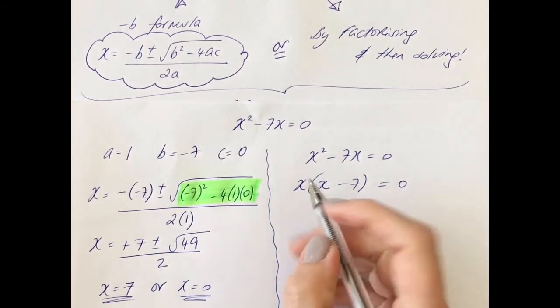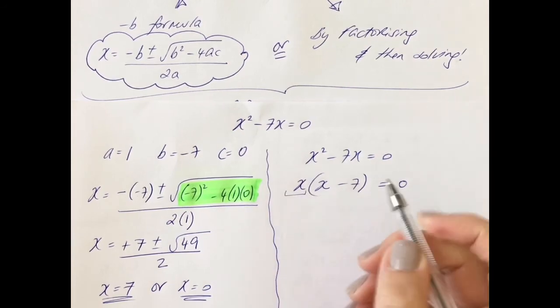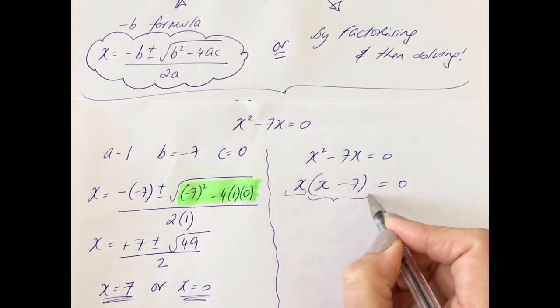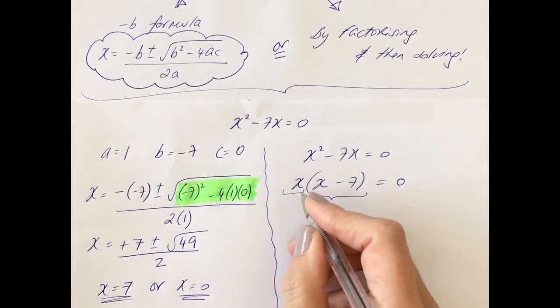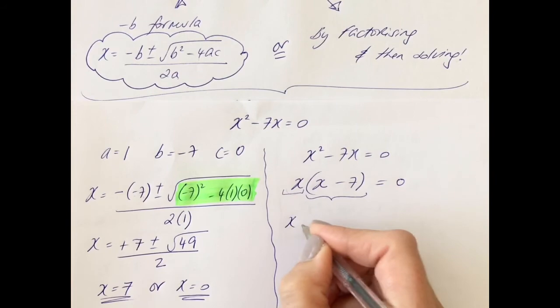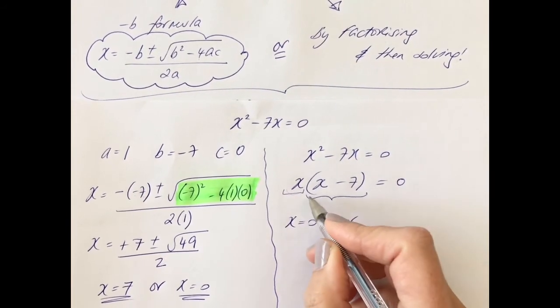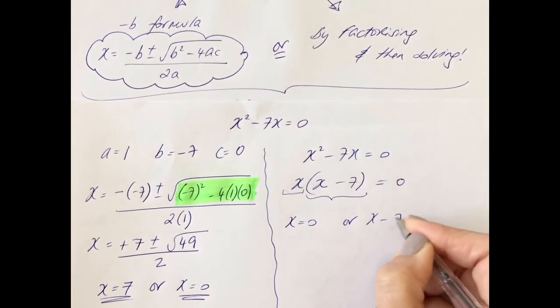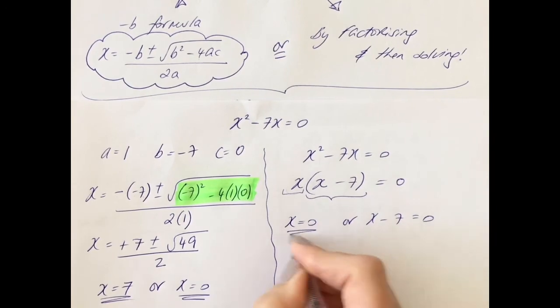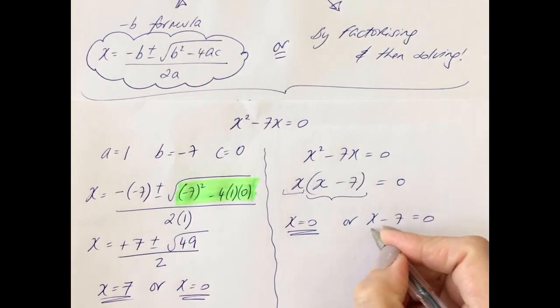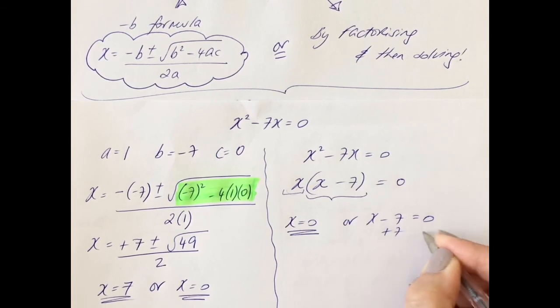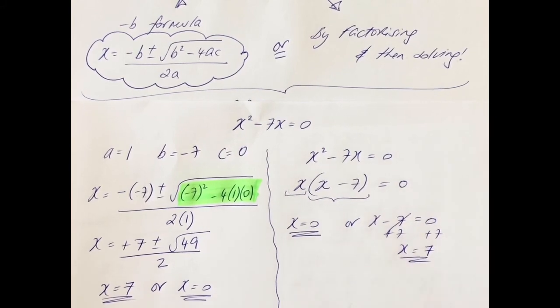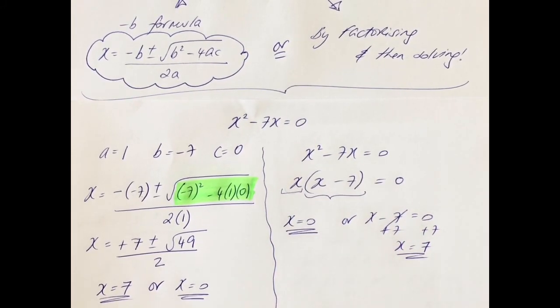So either this is zero or this is zero. This is even more straightforward than before. Either this bit here, the x is zero, or the x minus seven is zero. So that's solved for you already and we got that over here. And then this equation is very easy to finish off: add seven to both sides and we get x is equal to seven. So the answer is x equals zero or x equals seven.